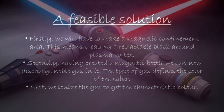Now we will explain a feasible solution for making a lightsaber. Firstly, we will have to create a magnetic confinement area — this means creating a retractable blade around a plasma vortex. Secondly, we will have to make a magnetic bottle in which we can discharge noble gas. Next, we ionize the gas to get the characteristic color.